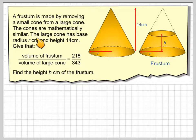The cones are mathematically similar. The large cone has a base radius of r and height 14. Given that the volume of the frustum divided by the volume of the large cone is equal to 218 over 343, find the height h centimeters of the frustum. So we need to find this height here of the frustum.